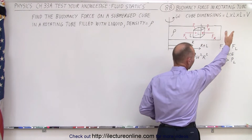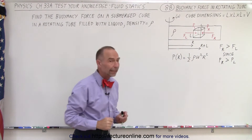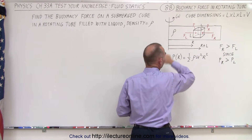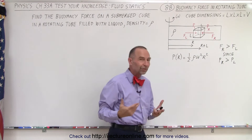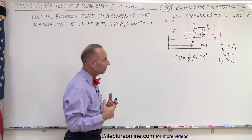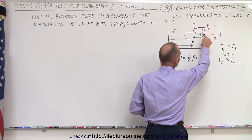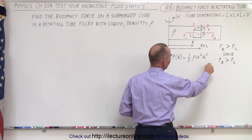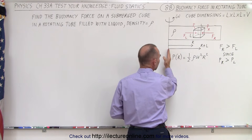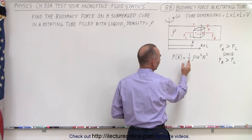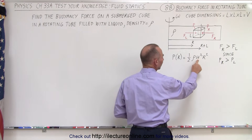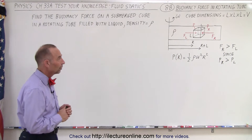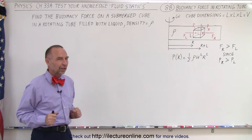The cube dimensions are L by L by L, which gives the volume of the cube. What we need to consider is the force on the right side of the face and the force on the left side of the face, and from that we should be able to find the buoyancy force. The force on the right will be greater than the force on the left because the pressure on the right is greater. Notice that pressure is a function of radius from the axis of rotation: P = ½ρω²r², an equation derived in a previous video. We'll use that to find the buoyancy force on the cube.